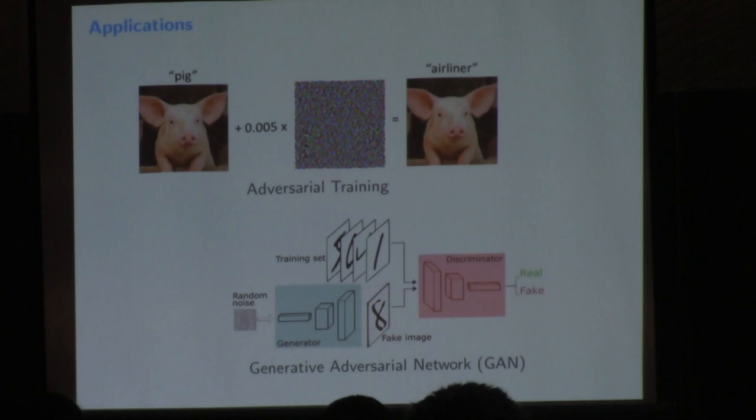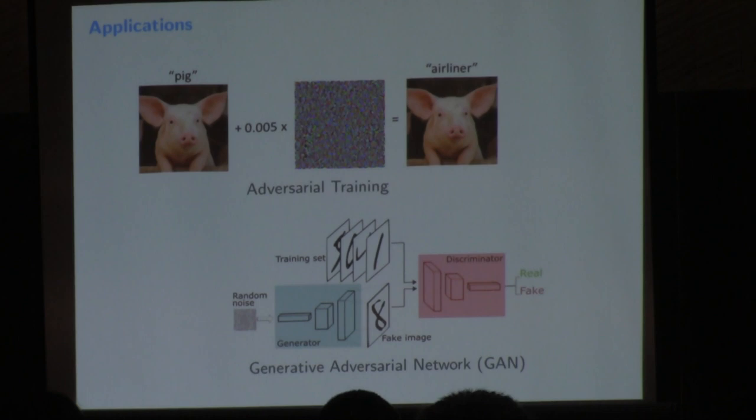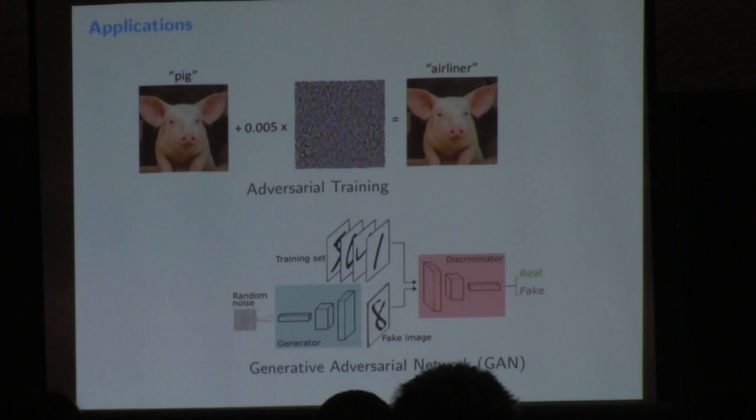The second well-known application is GANs — Generative Adversarial Networks. The task is to generate pictures that look similar to real images. The two players are a generator trying to produce realistic images and a discriminator trying to tell which images are generated versus real. We hope that as they compete against each other, the generator will learn to produce better and better images.